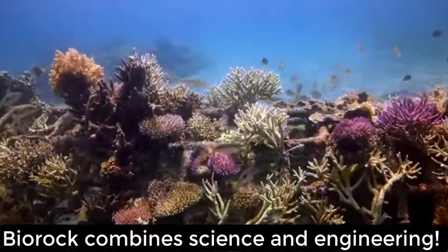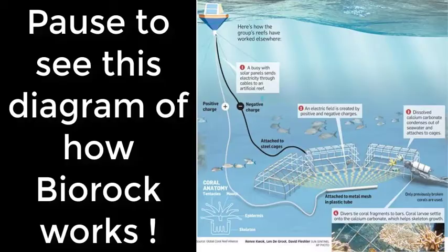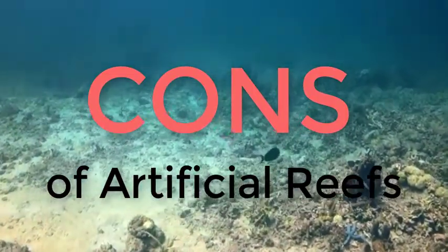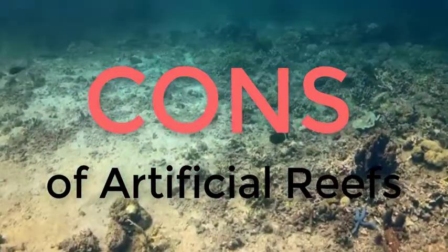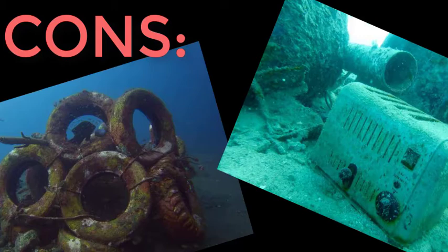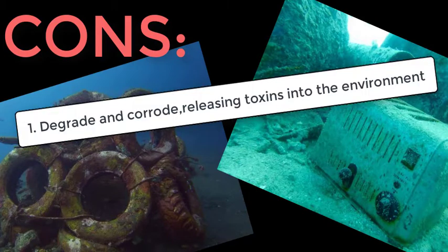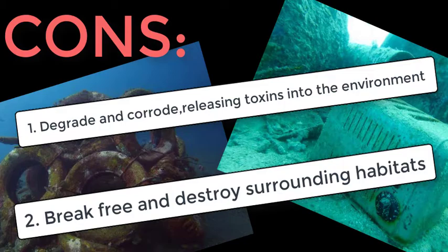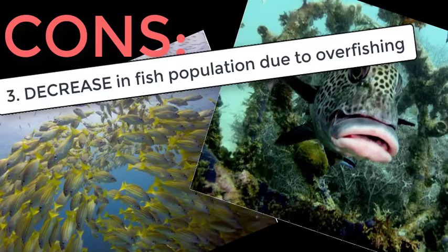How cool is that? So let's look at some cons of building an artificial reef. Depending on the materials used — especially old tires or actual shipwrecks — they can degrade and corrode, releasing toxins into the water. They could also break free due to wave action if not secured enough and destroy the surrounding areas. Instead of creating more biodiversity and biomass, it could actually lead to overfishing in that area because the higher fish concentration makes them easier for fishermen to catch.